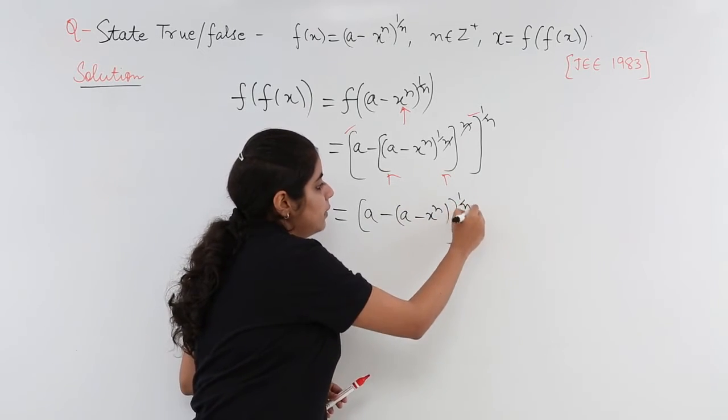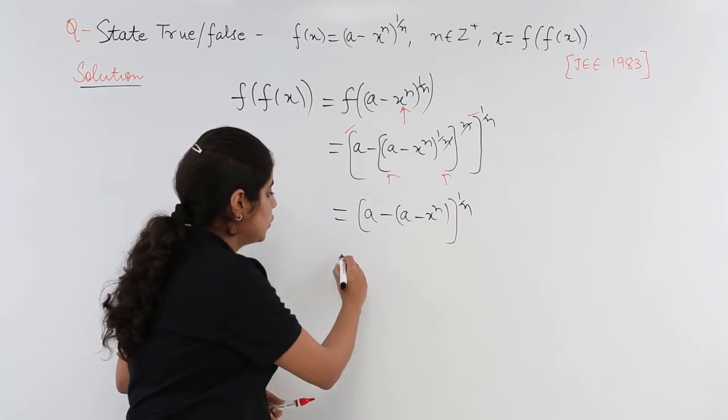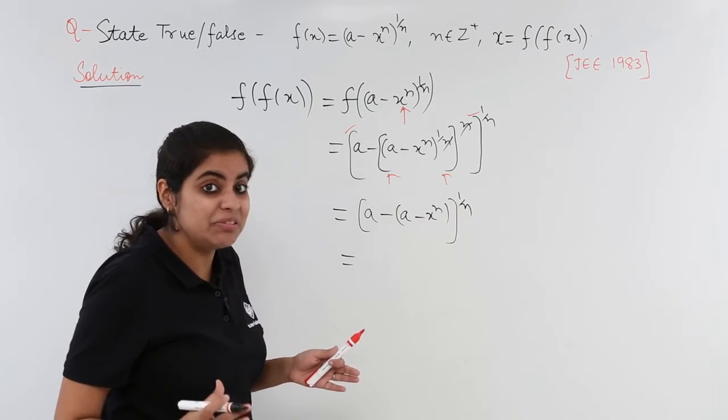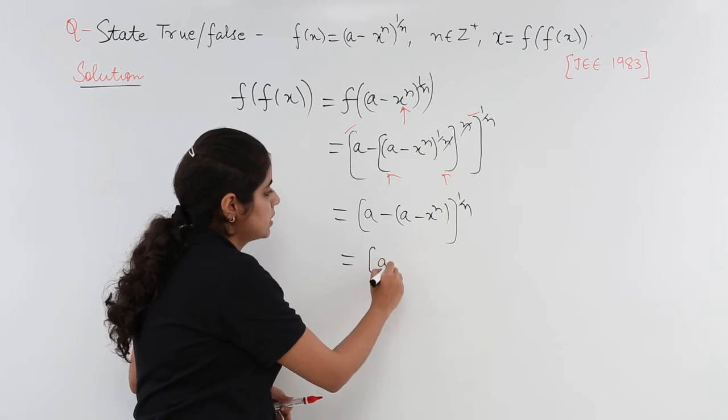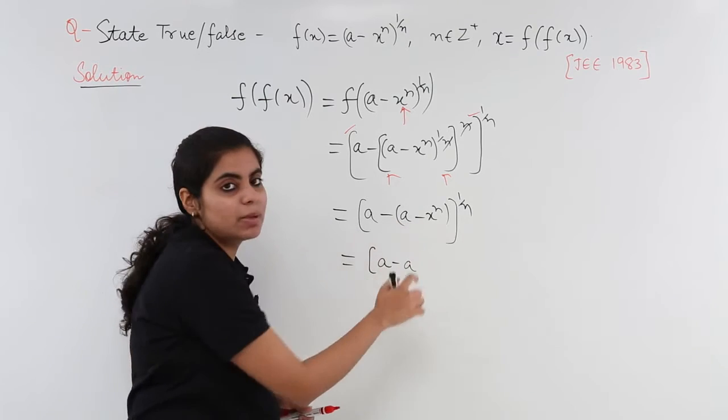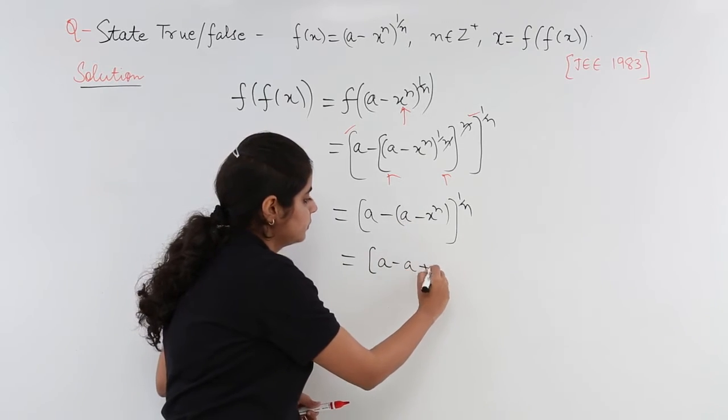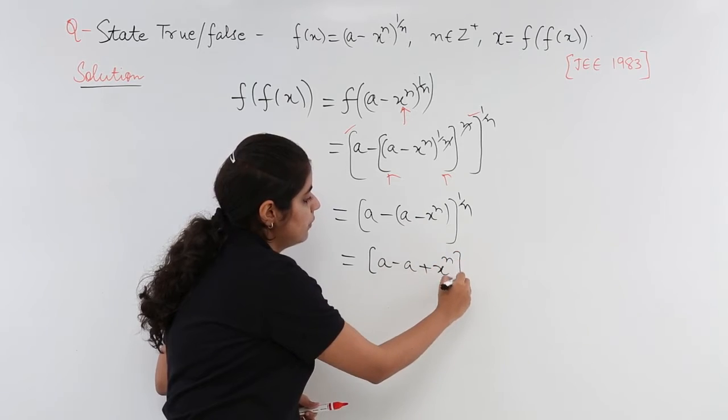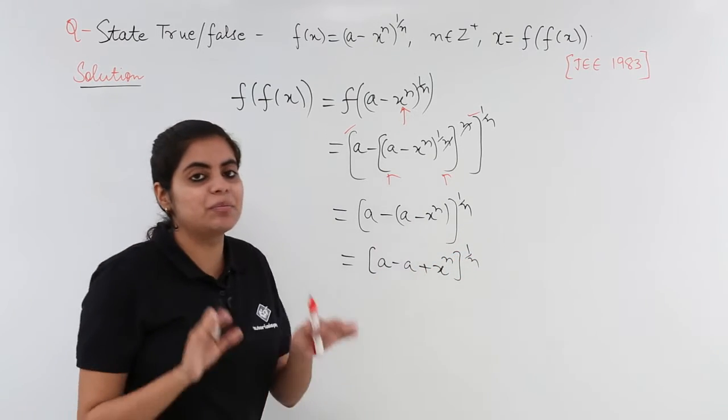What else is left? Power 1/n is left. You put the power 1/n. Now what happens, you open the brackets in between: a comes, minus comes, now a again comes, minus minus becomes plus x^n, outside power 1/n remains as it is.